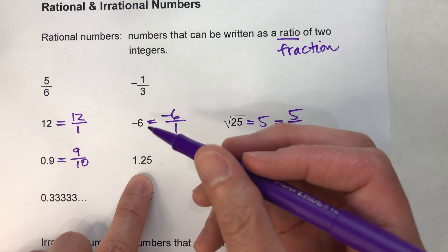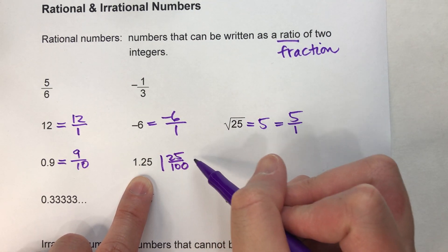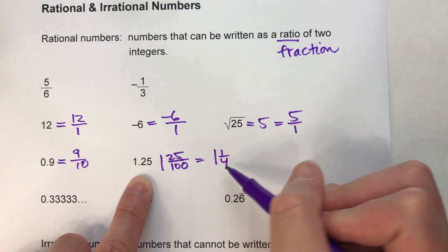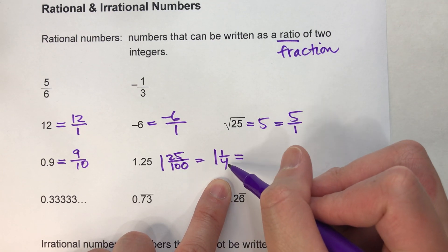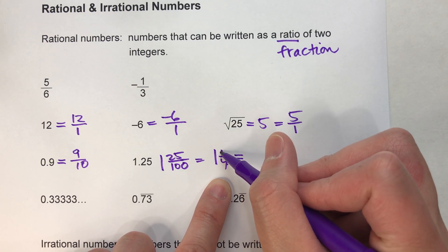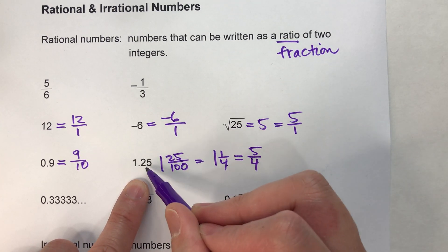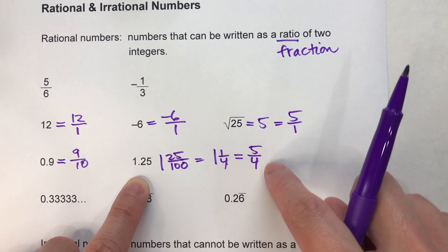1.25, which would be 1 and 25 hundredths, or 1 and 1/4. But we can write this as a ratio of two integers. 4 times 1 is 4, plus 1 is 5. This is 5/4. Therefore, 1.25 is rational because we can write it as a ratio of two integers.